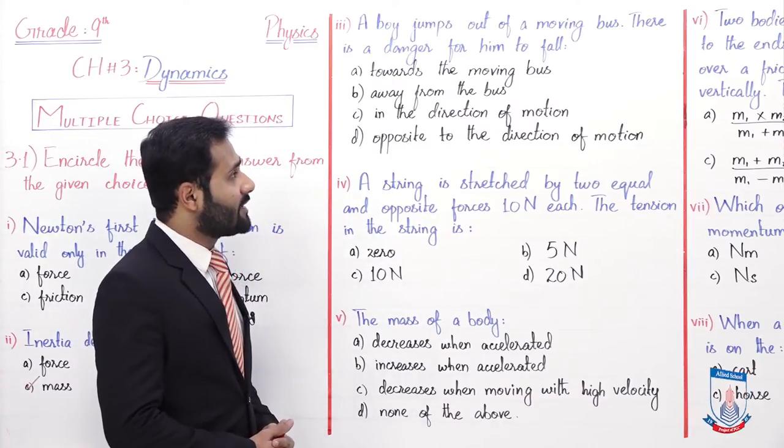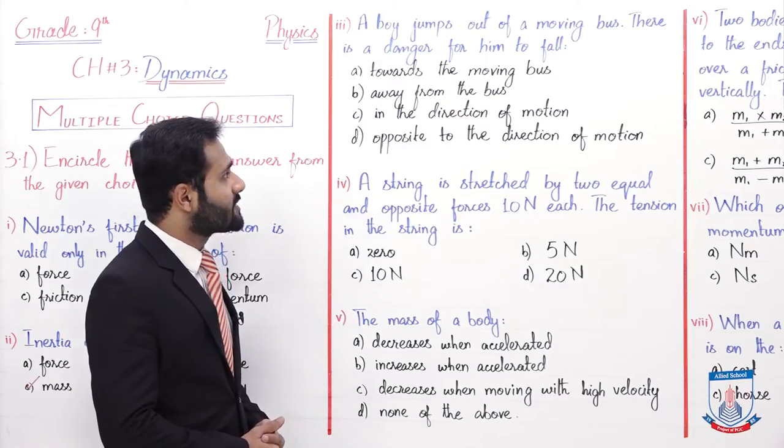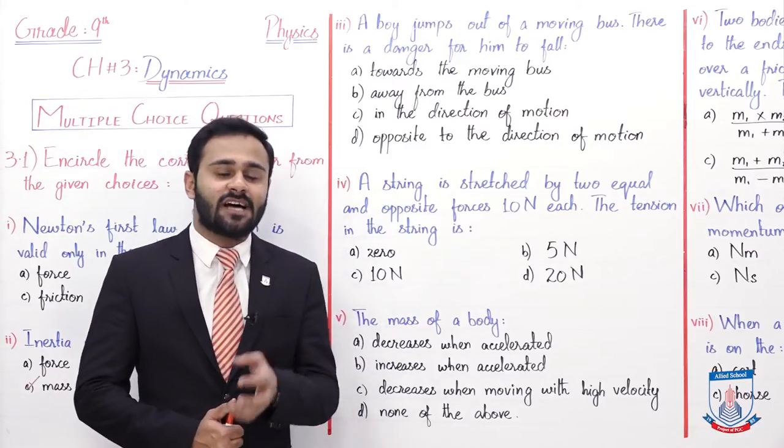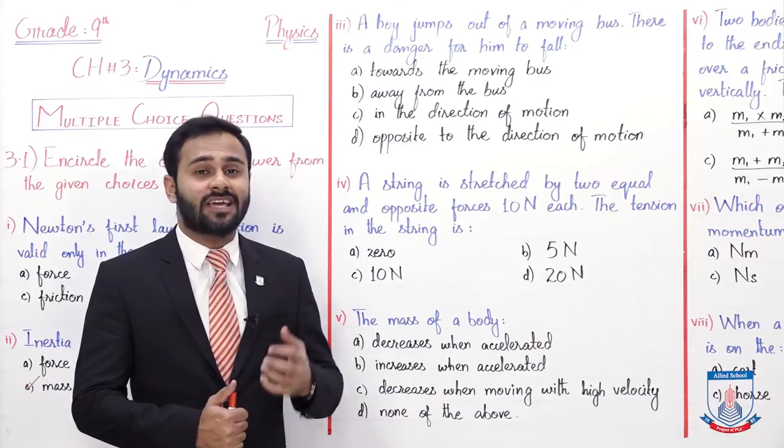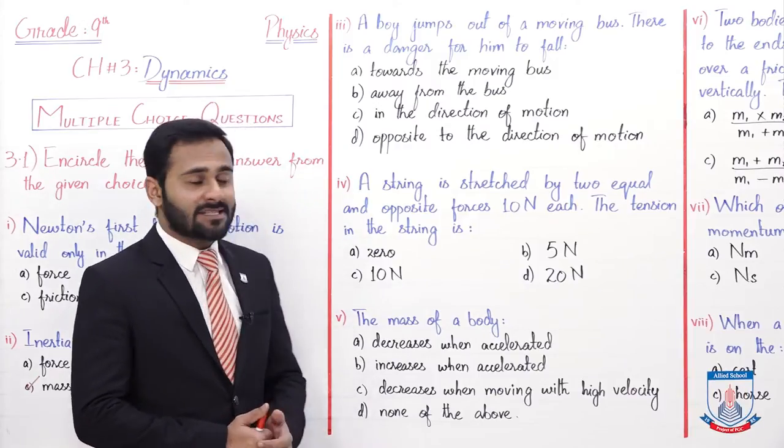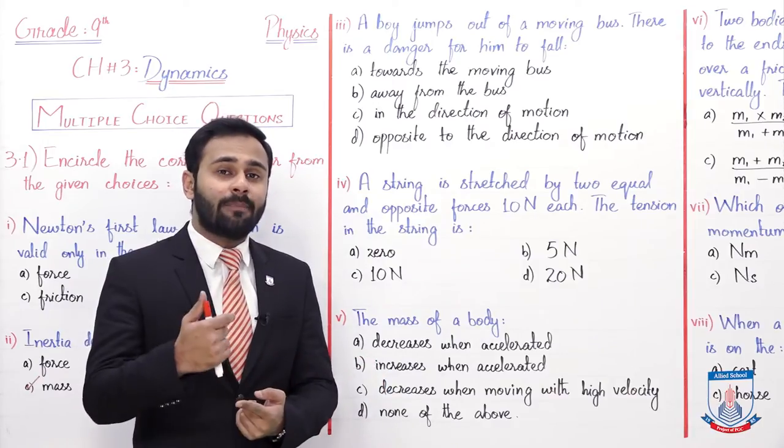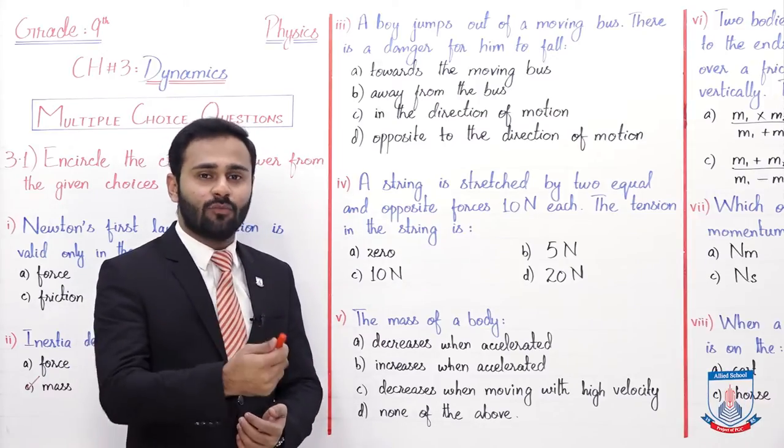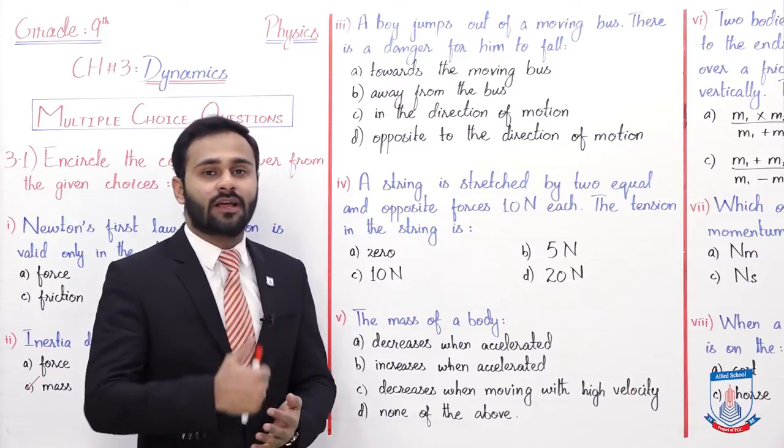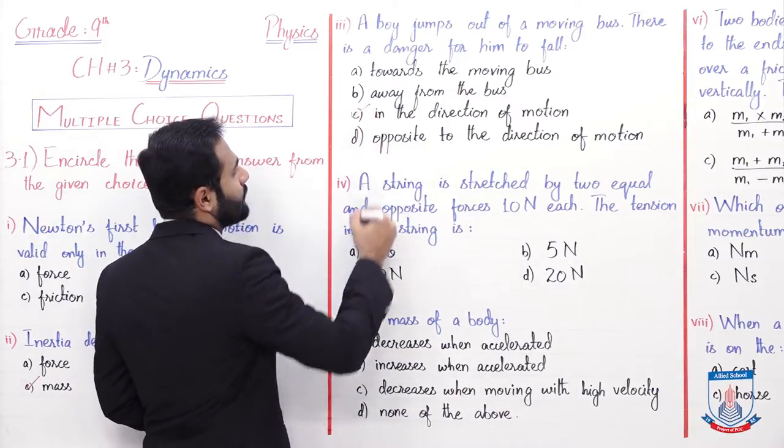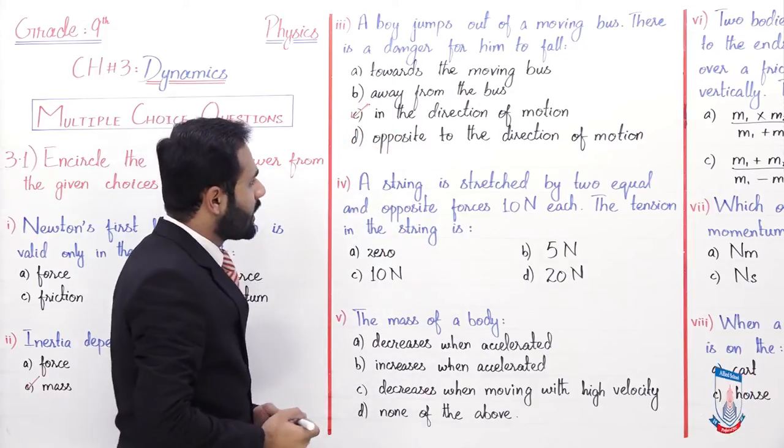Now the third MCQ. A boy jumps out of a moving bus and there is a danger for him to fall. A towards the moving bus, B away from the bus, C in the direction of motion, and D opposite to the direction of motion. So the correct option is in the direction of motion which is C.